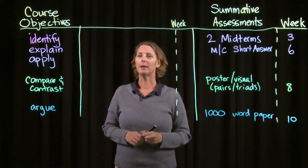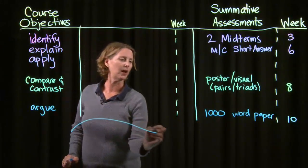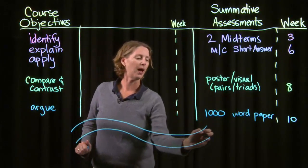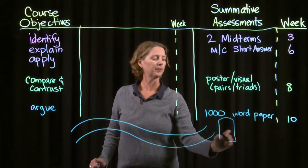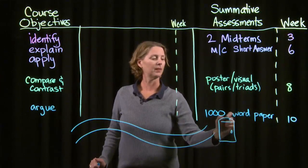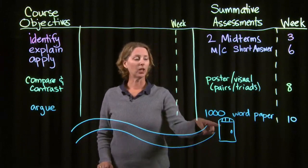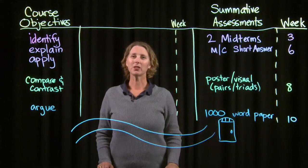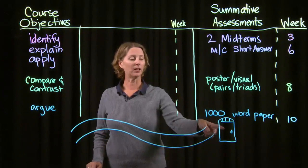I'd also like you to imagine that my students are walking along a path, and this path goes from the outcomes to the assessments. At the end of the path, each of these assessments is a gate, and the gate is locked. My goal as the instructor is to make sure that students are staying on this path and that they can unlock the gate at the end of the course. So how do I make sure my students are staying on the path and have the keys they need to unlock this gate?